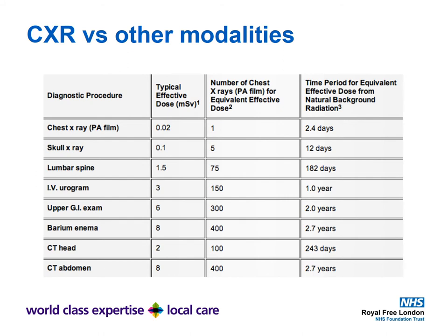The third column shows the time period for an equivalent effective dose of natural background radiation — knowing a few of these can be useful if a patient asks. A chest X-ray has a typical effective dose of 0.2 millisieverts, equivalent to just 2.4 days of background radiation. A lumbar spine X-ray is 1.5 millisieverts — equivalent to 75 chest X-rays or 182 days — and should always be ordered conscientiously. A CT head is equivalent to 100 chest X-rays and 243 days, while a CT abdomen is 8 millisieverts, or 400 chest X-rays, or 2.7 years.